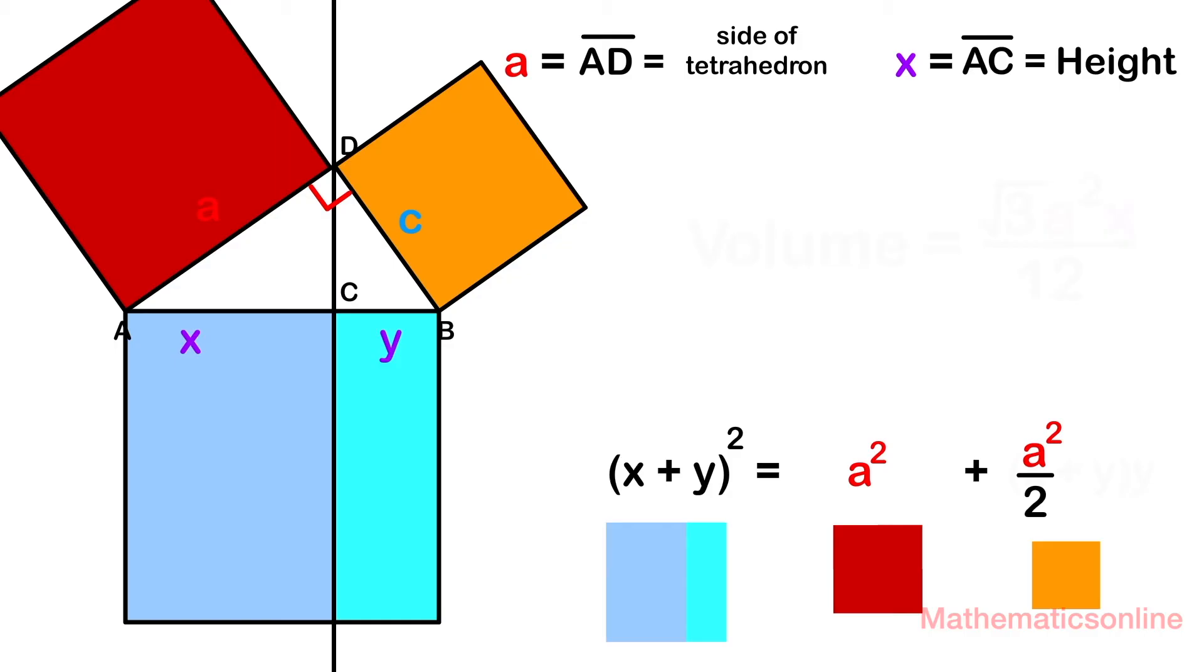Line CD divides the triangle into two smaller right triangles that are similar. So here is the right triangle ACD, and because it is similar, it's going to have the same relationship on its sides as the larger right triangle. Therefore, a squared is equal to x squared plus x squared divided by 2.